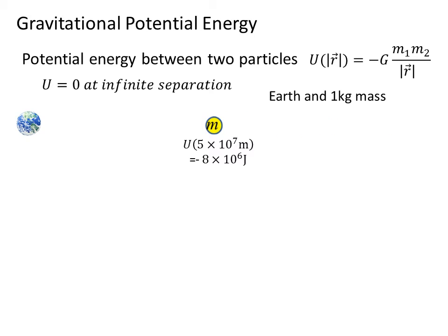If we bring it in halfway from that point, now we're at a position of five times ten to the seventh meters, and the potential energy has gotten more negative to minus eight times ten to the sixth joules, or eight million joules.